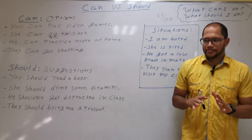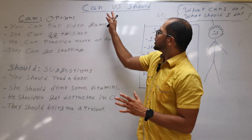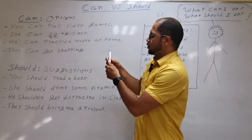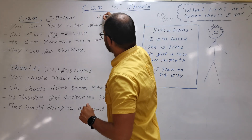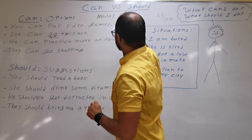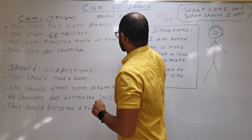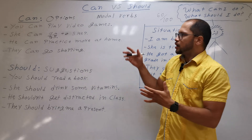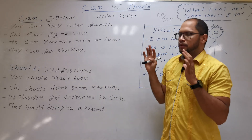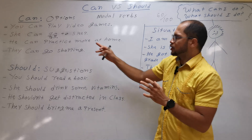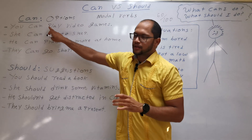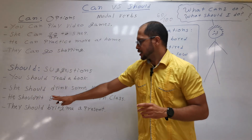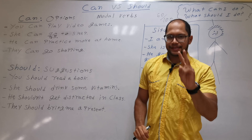So here we have again SHOULD and CAN — they are what we call modal verbs. It's important to know that because after a modal verb you always use the verb in the base form. So: she can go, she should drink, he shouldn't drink.